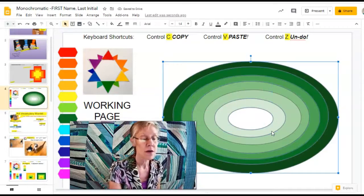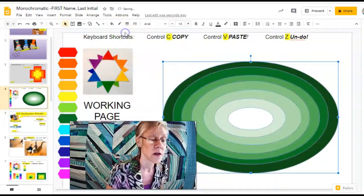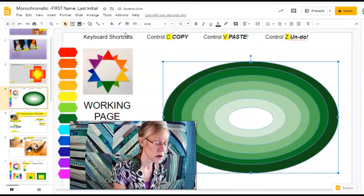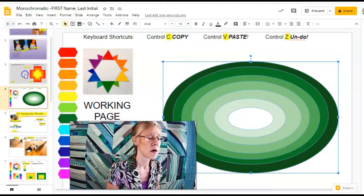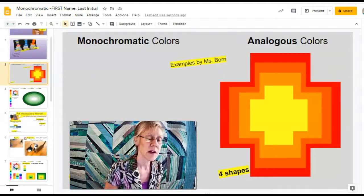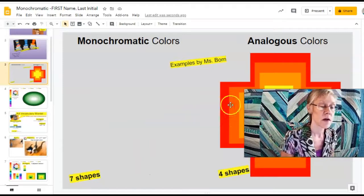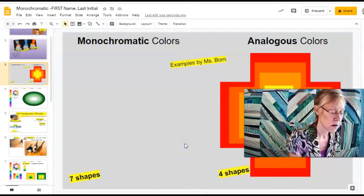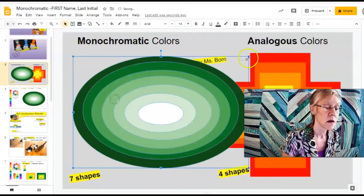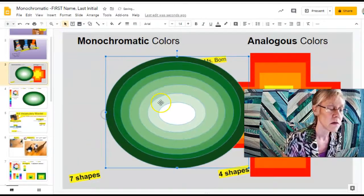So if I select over all the shapes, I go to the line tool and say transparent. It's still selected. Control C to copy. Back to my project page. It's going to be too big, but I'll just resize it. Control V to paste. And I can change the size just a little bit so it looks good on the page.